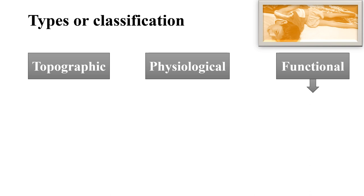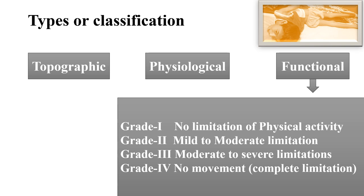In functional classification, we grade CP according to severity. Grade 1: no limitation of physical activity. Grade 2: mild to moderate limitation. Grade 3: moderate to severe limitation of activity. Grade 4: complete limitation — no movement; patient is totally bedridden.